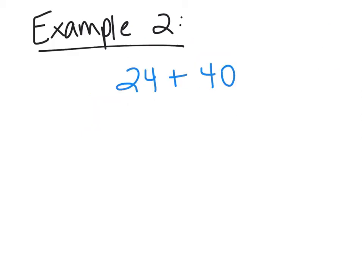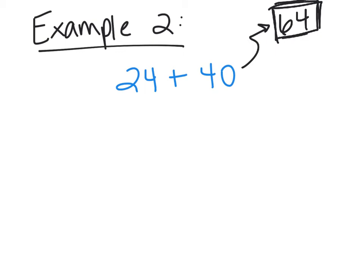Let's take a look at one more example. Example 2 is 24 plus 40, so we're finding the sum of 24 plus 40. If it helps you, you can do that right away: 24 plus 40 is 64. This will help us at the end when checking that our answer is correct. The first thing I want to do is figure out the factor trees of 24 and 40. Go ahead and do that on your own, then click play again.